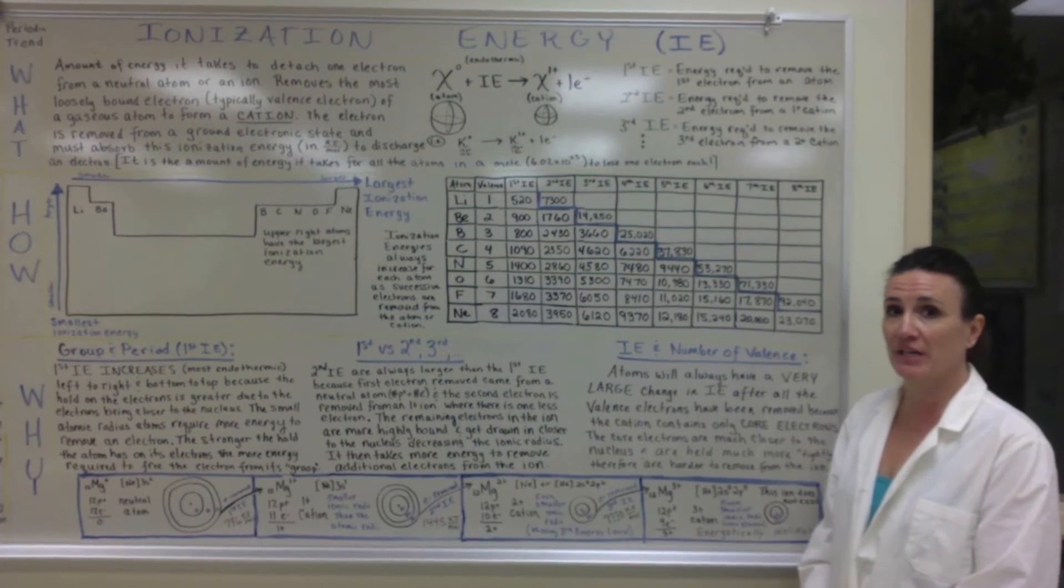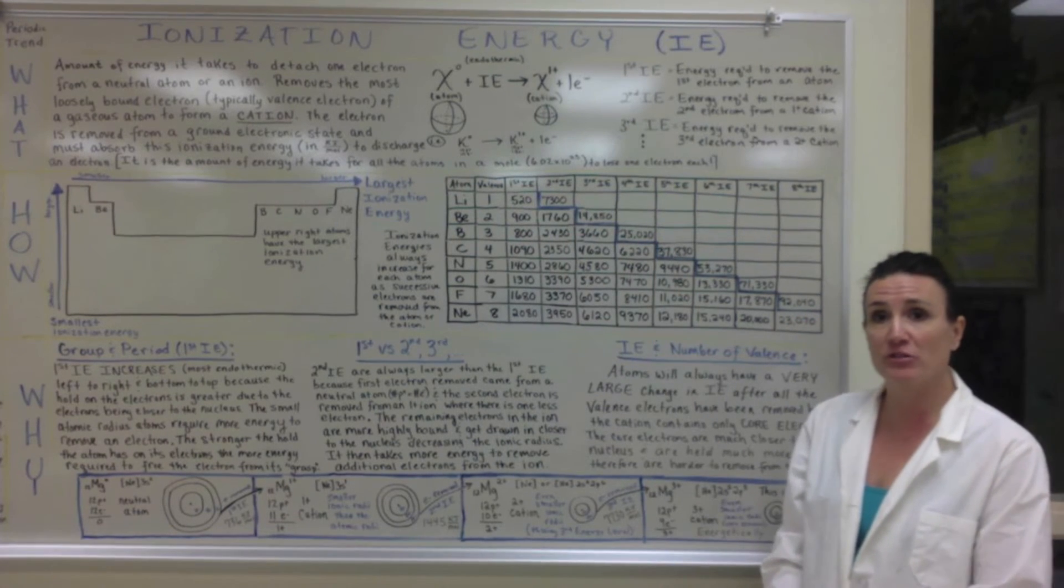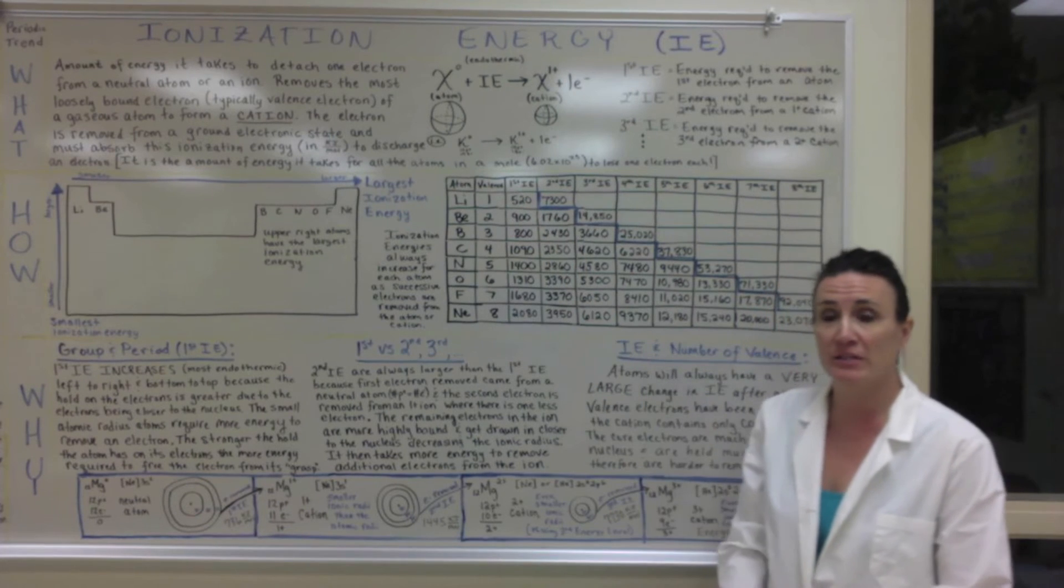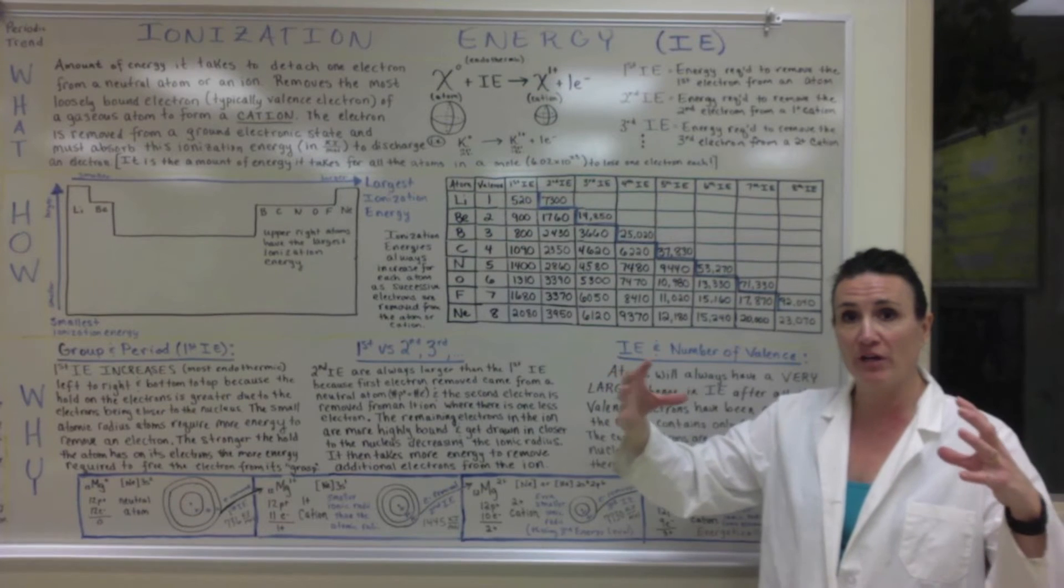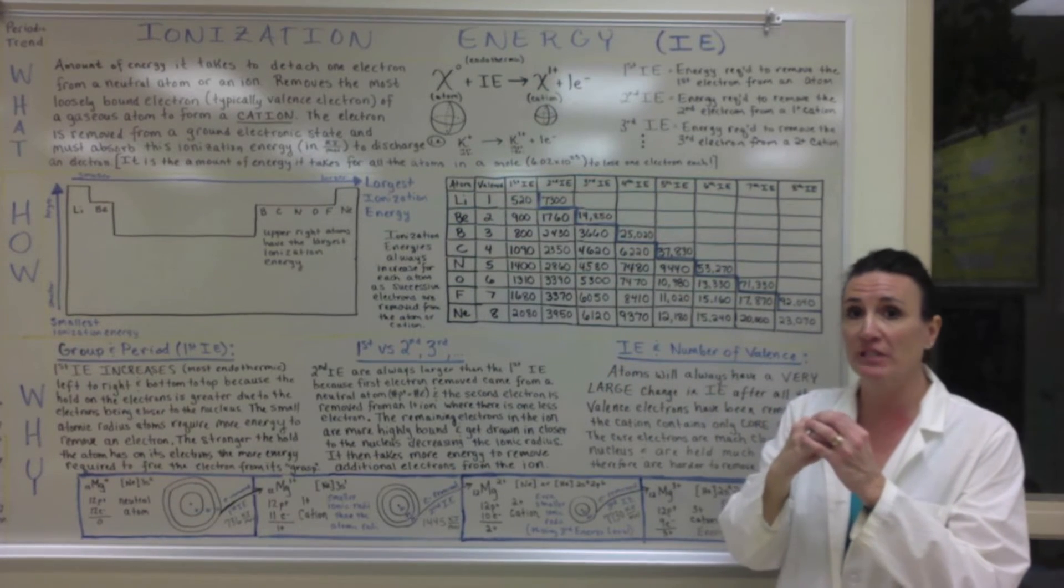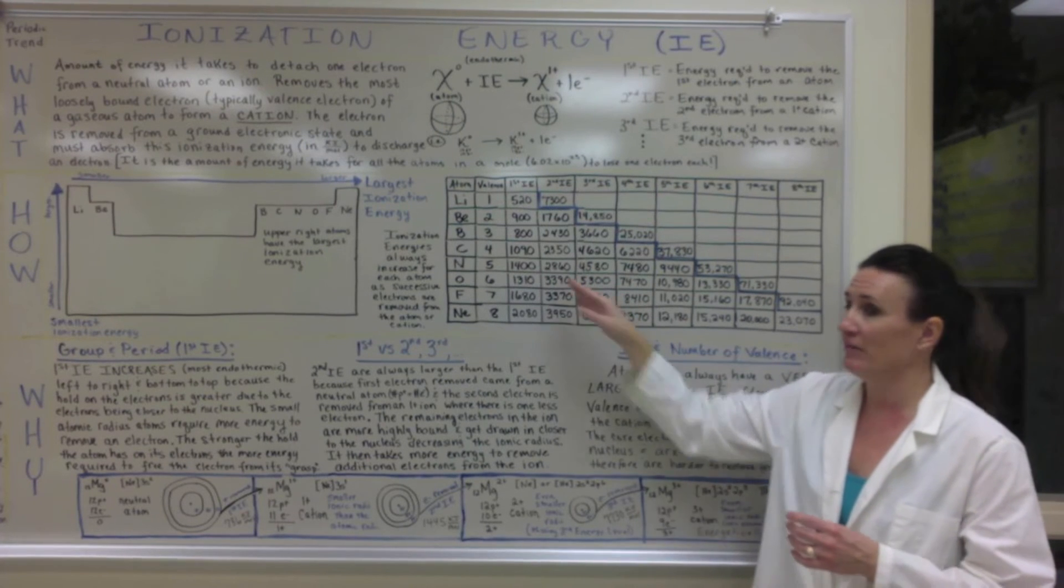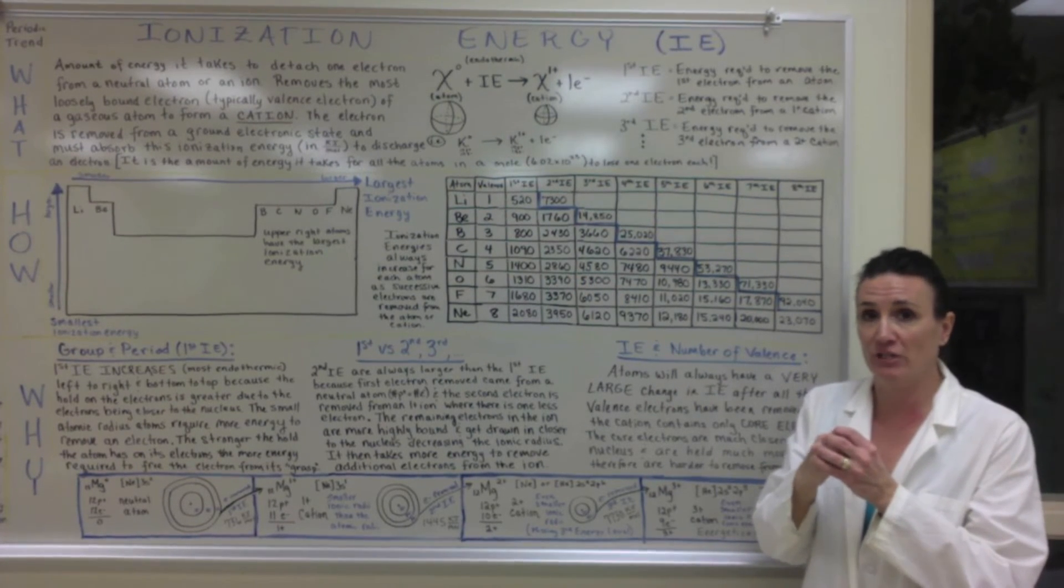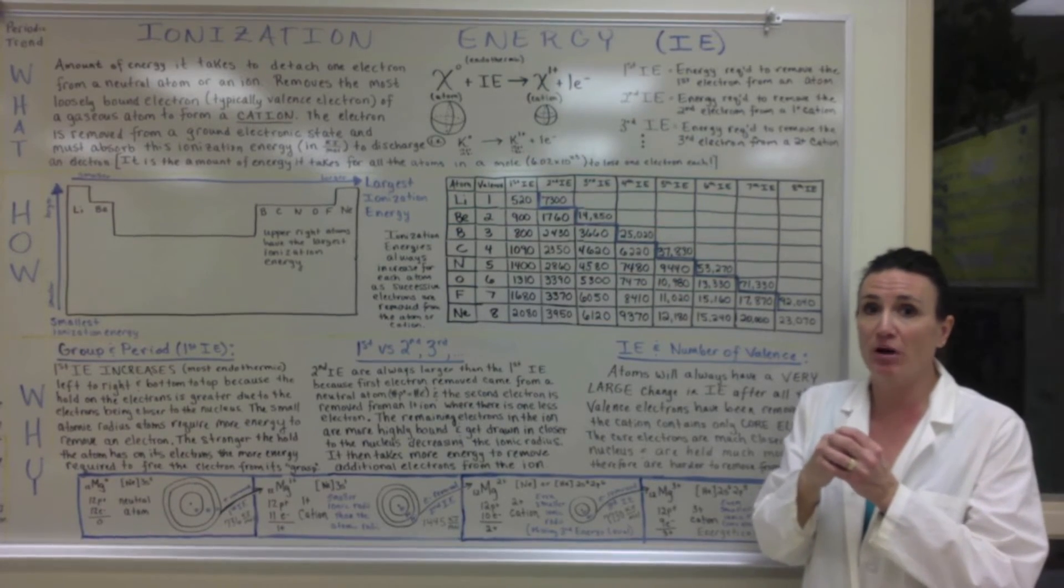The second periodic trend is ionization energy. These are the ionization energies listed for period two elements. You'll notice that lithium and beryllium, which are metals, have large radii and low ionization energy because the electrons are farther away from the center of the atom and more loosely held, which means they're easier to remove. Non-metals have higher ionization energy, so they have a higher hold on those electrons due to them being closer to the center, which is positive, making them harder to remove.